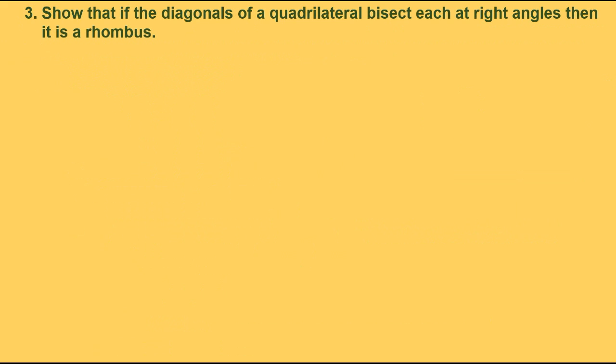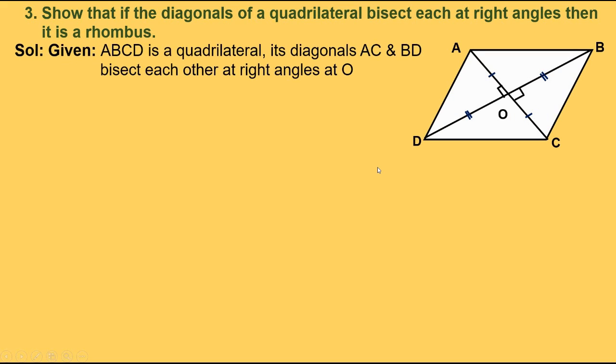Show that if the diagonals of a quadrilateral bisect each other at right angles, then it is a rhombus. So taking a quadrilateral in which diagonals bisect each other at right angles, we need to show that it is a rhombus. Given: ABCD is a quadrilateral in which diagonals AC and BD bisect each other at right angles at O. We need to show that ABCD is a rhombus. We know that a rhombus is a parallelogram in which all the sides are equal. So we have to show ABCD is a parallelogram and then all sides are equal. We know that in a quadrilateral, if diagonals bisect each other, then it is a parallelogram.